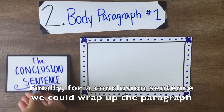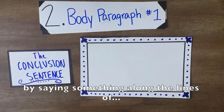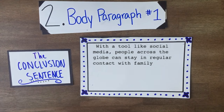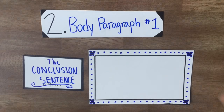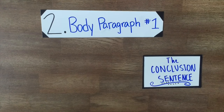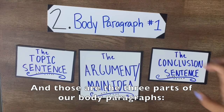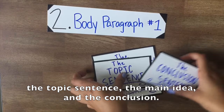Finally, for a conclusion sentence, we could wrap up the paragraph by saying something along the lines of: with a tool like social media, people across the globe can stay in regular contact with family and friends, and find new friends. And those are the three parts of our body paragraphs: the topic sentence, the main idea, and the conclusion.